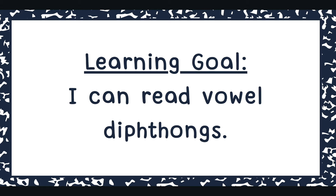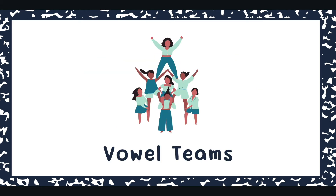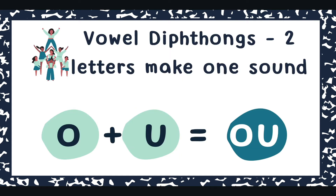Now that sounds fancy, doesn't it? Well, a diphthong is really just a special type of vowel team. We've been talking about how vowels like to team up with other letters, and vowel diphthongs are where we have two letters and they work together to make one new sound. Okay, so we're going to practice some of those today.